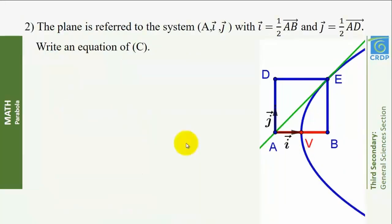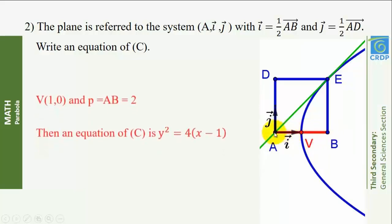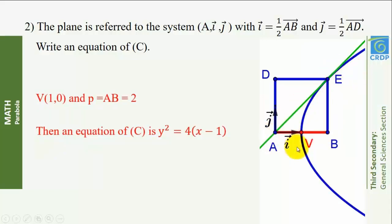The plane is referred to the system (A, I, J) with I = ½ vector AB and J = ½ vector AD. Write an equation of C. The coordinates of vertex V are (1, 0) and P, the distance from the focus to the directrix, equals AB = 2. Since the focus is inside the parabola, C opens right, so the equation of C is Y² = 4(X − 1).